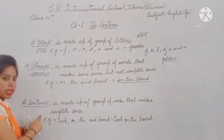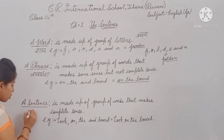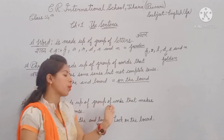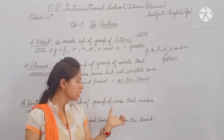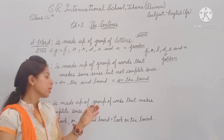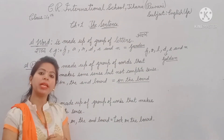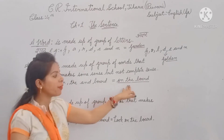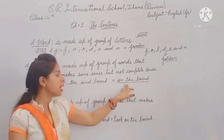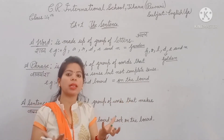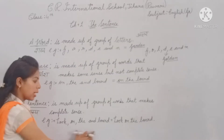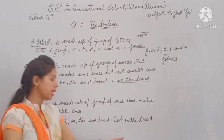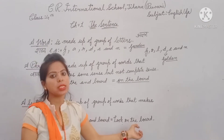Now, what is a sentence? In Hindi, we call a sentence a 'vaakya.' A sentence is made up of a group of words that makes complete sense — complete, meaningful sense. In a phrase we grouped words like 'on the board,' but we couldn't understand the full meaning. When we combine four words like 'Look on the board,' that forms a sentence.